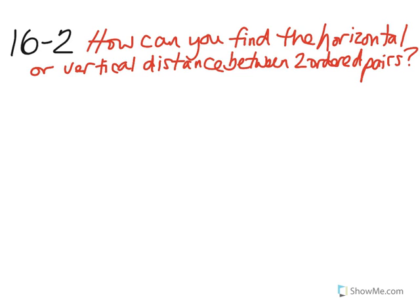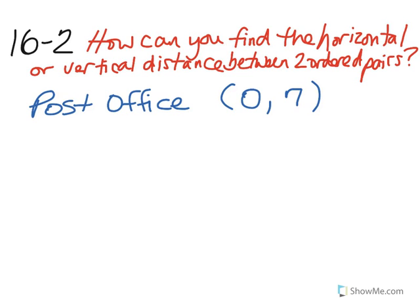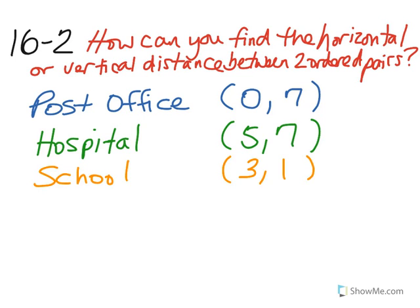Please use your 10x10 grid to work on the following problem. In planning a miniature village, Glenn plotted the post office at 0-7, the hospital at 5-7, the school at 3-1, the library at 3-6, and the bank at 5-1.